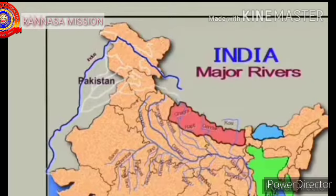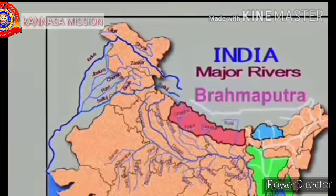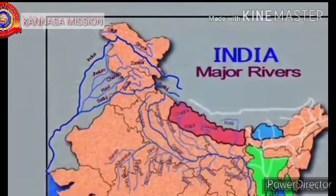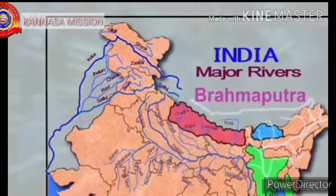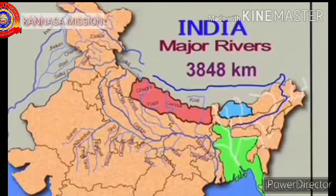It is the longest river and national river of Pakistan. The next important Himalayan river is the Brahmaputra. The river Brahmaputra is one of the major rivers of Asia, which flows through China, India, and Bangladesh. This river is 3,848 km long.